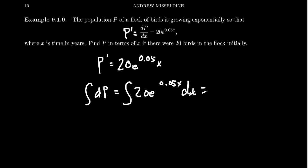The left-hand side is just P. The right-hand side, we get 20/0.05 * e^(0.05x) + C. Here, 20 divided by 0.05—beware that 0.05 is actually 1/20. If you divide by 1/20, you multiply by 20. We get that the population equals 400e^(0.05x) + C, where 20 times 20 equals 400.